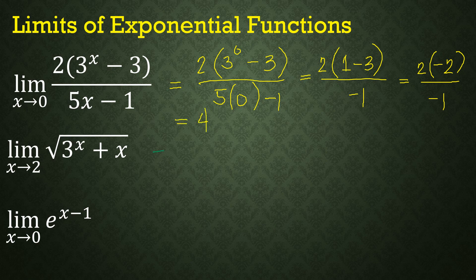Next: the limit of √(3^x + x) as x approaches 2. Substituting x = 2: √(3^2 + 2) = √(9 + 2) = √11.